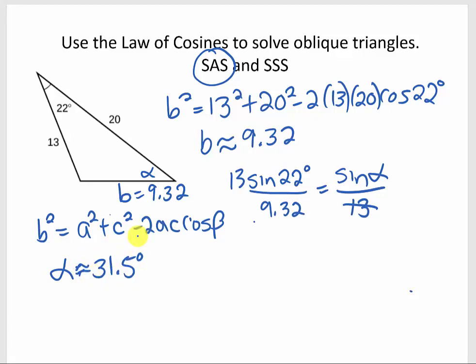And then I can easily find out the other missing angle gamma because they have to add up to 180. So taking the two angles that I know, 31.5 and 22, subtracting them from 180, it looks like I get 126.5 for my last angle.